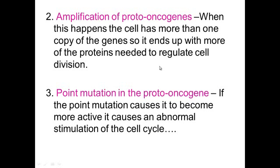You can also have a point mutation in a proto-oncogene. A point mutation causes the proto-oncogene to become more active than it's supposed to be, which would cause more cell cycle transcription factors and more cell division, making the cell cancerous.